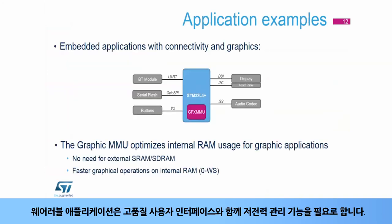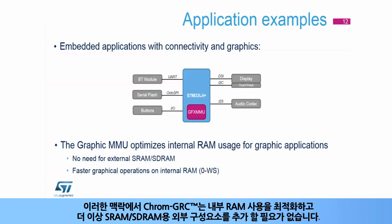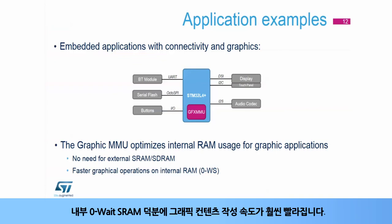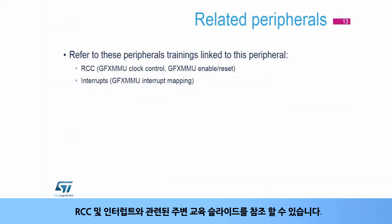Wearable applications require low power management functions together with a high-quality user interface. In this context, the Chrome GRC optimizes the internal RAM usage and it is no longer necessary to add an external component for SRAM or SD-RAM. The graphical content creation is much faster thanks to the internal zero-wait-state RAM. You can refer to peripheral training slides related to RCC and interrupts.